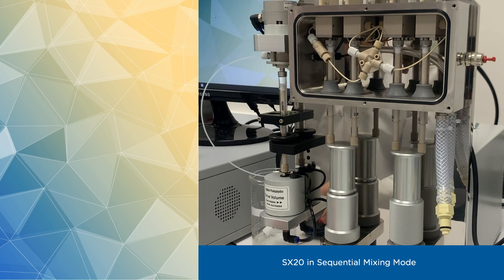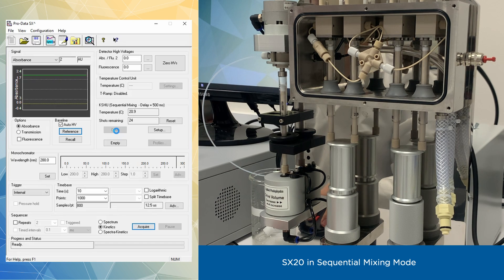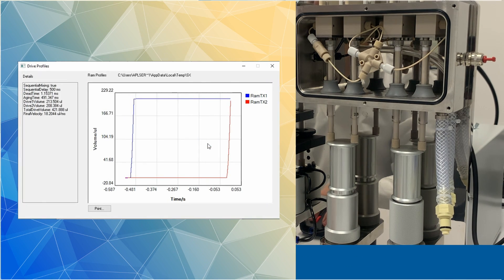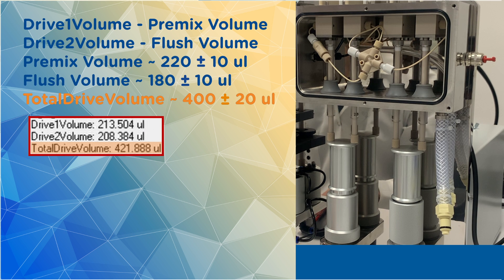If your profile information is visible, let's proceed. In our previous video, where we calibrated drive volume for single mixing setup, a drive 2 volume showed about 120 microliters, as we would expect. Now we're seeing drive 1 and drive 2 volume. The first volume value is premix volume, which should be around 220 microliters, while drive 2 volume should be around 180 microliters, to make up a total of 400 microliters.